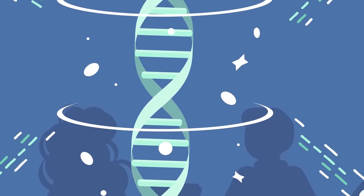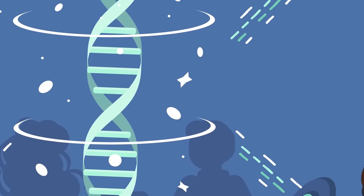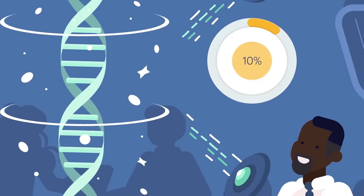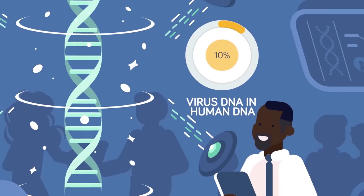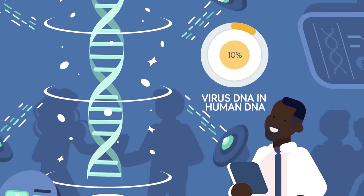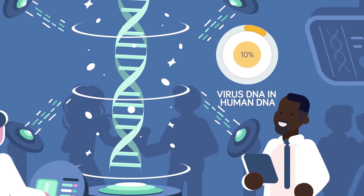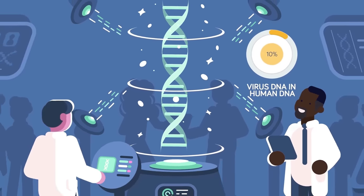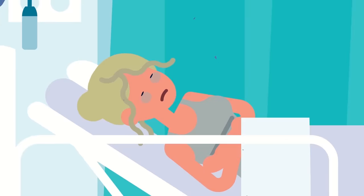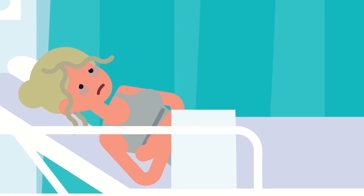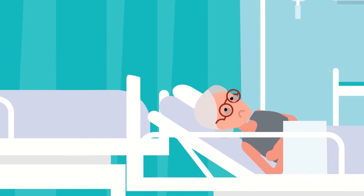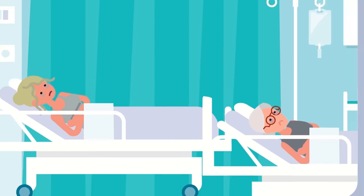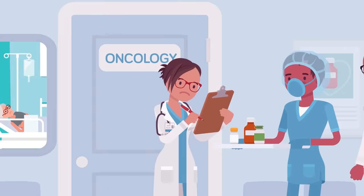Your DNA right now is actually comprised of around 10% virus DNA. Think about that — one tenth of the genetic code that makes you is actually virus DNA. Like mutations, the chunks of viral DNA in our genome were inserted randomly. Some is harmful, such as viral DNA that can cause cancer.